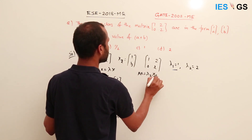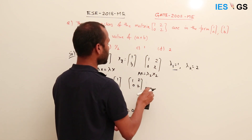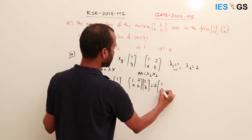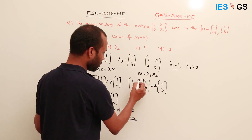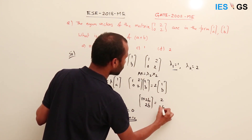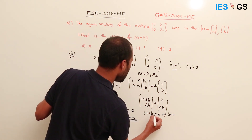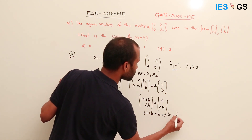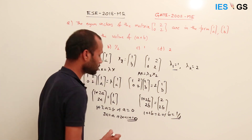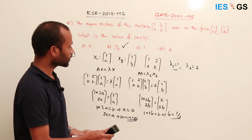For λ₂=2, eigenvector x₂=(1, b): using Ax=λ₂x₂, matrix [1,2;0,2] times (1,b) equals 2 times (1,b). Top row: 1 plus 2b equals 2, so 2b equals 1, therefore b equals 1/2. Bottom row: 2b equals 2b — consistent. So a plus b equals 0 plus 1/2 equals 1/2. The correct answer is 1/2.